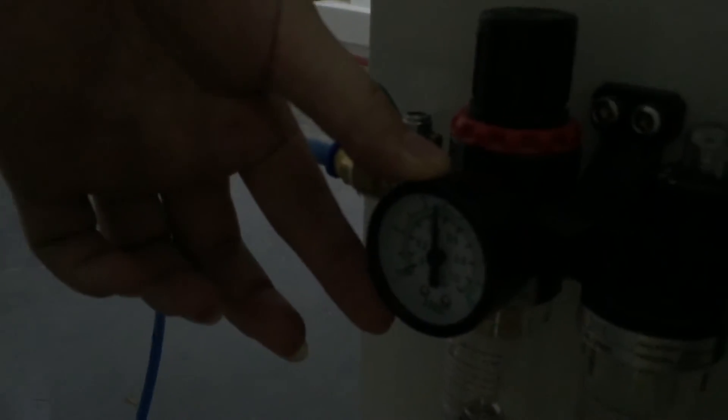And open this switch, adjust the switch until the pressure gauge reads about 0.6 kg.